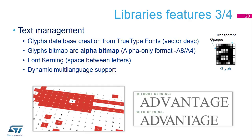Another feature of the Graphic Library is text management. Glyphs are a bitmap representation of characters, so the Graphic Library includes tools to convert TrueType fonts into glyphs — into alpha bitmaps. Each selected character is converted into a glyph, which is an alpha-only bitmap. The Graphic Library also handles font kerning, which is the space between letters, and supports dynamic multilanguage.